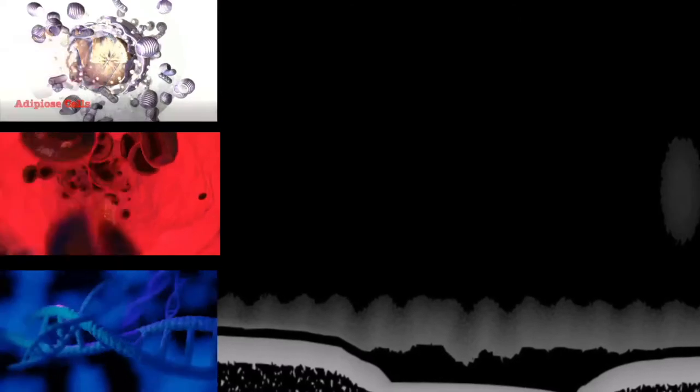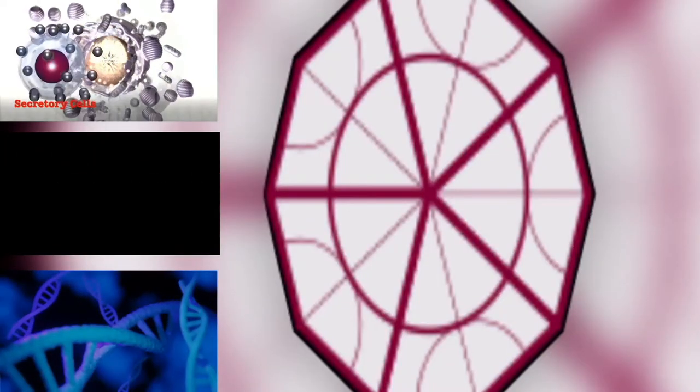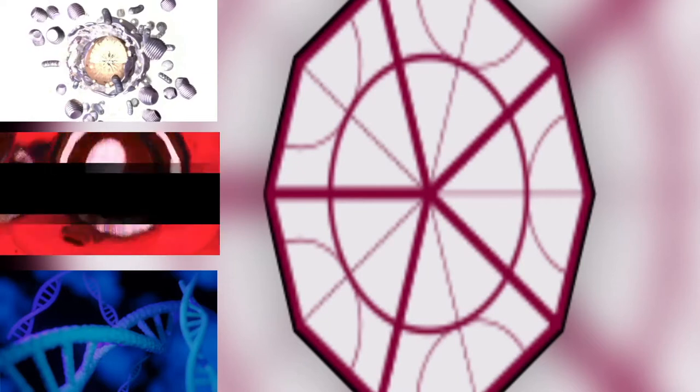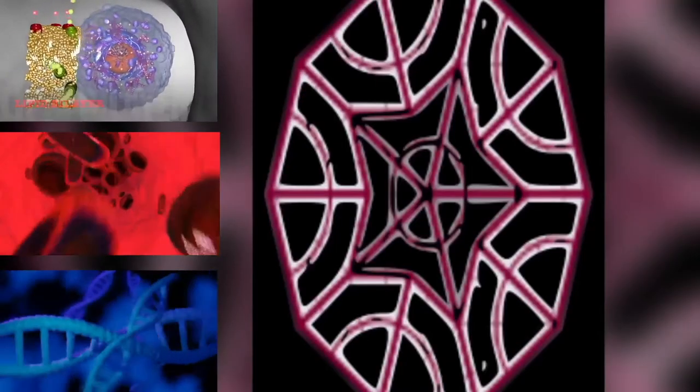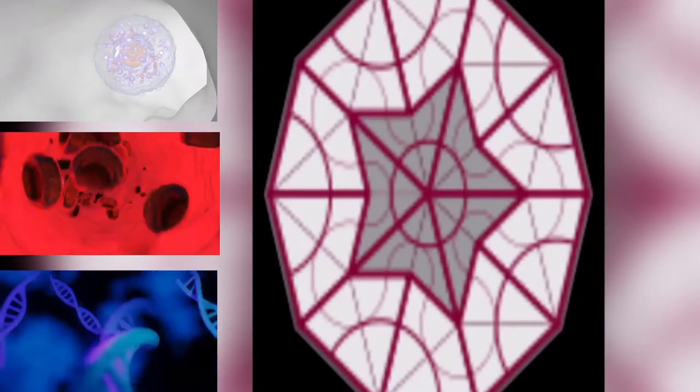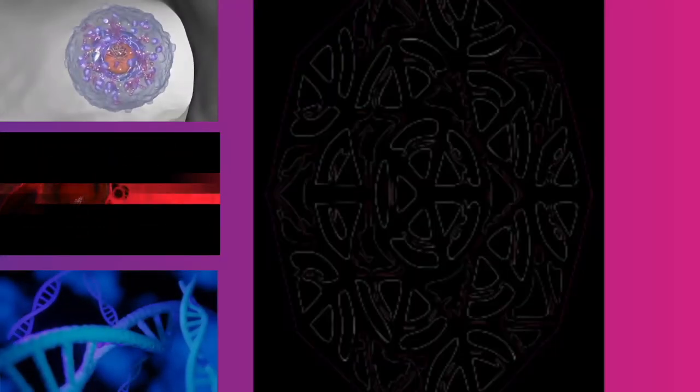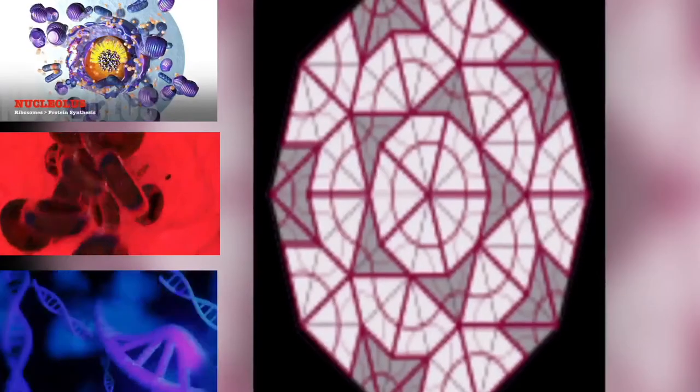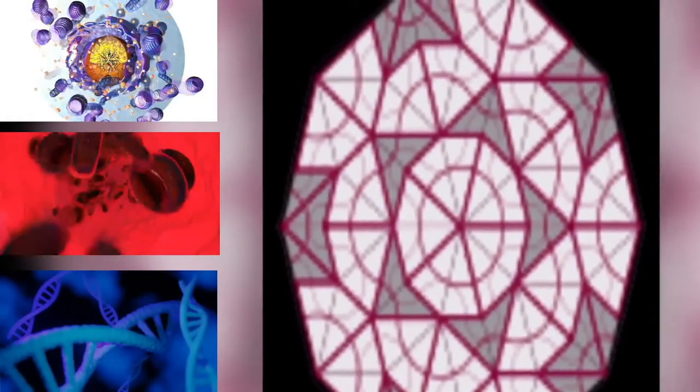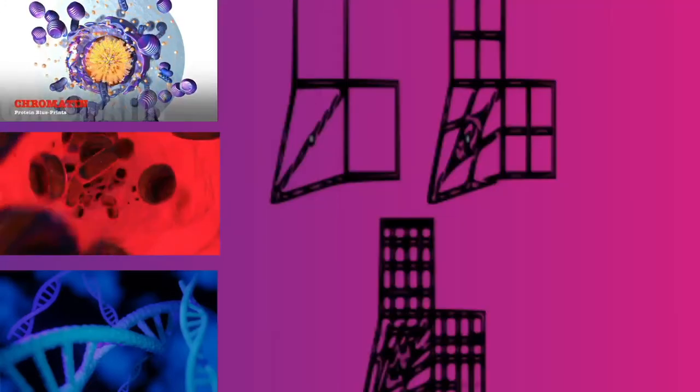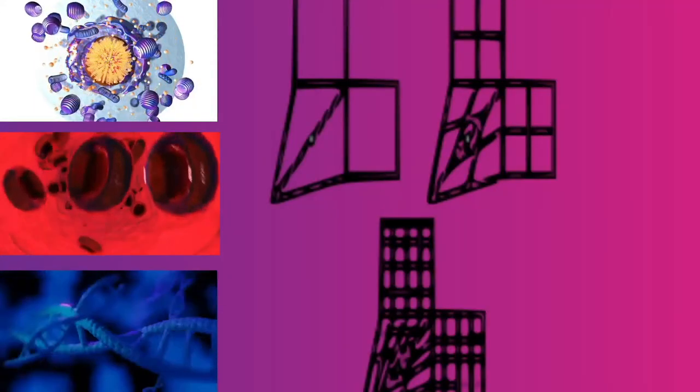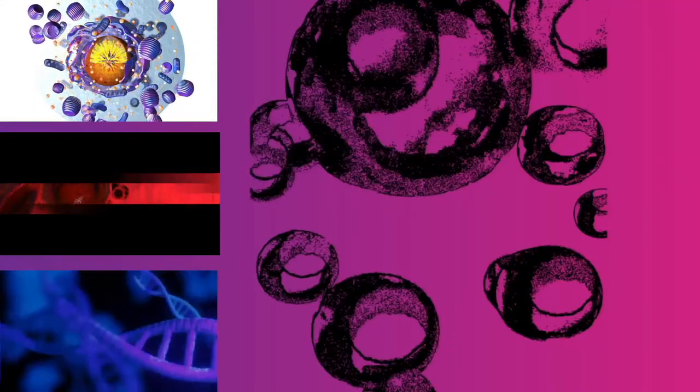Although plastids probably had a single origin, not all plastid-containing groups are closely related. Instead, some eukaryotes have obtained them from others through secondary endosymbiosis or ingestion. The capture and sequestering of photosynthetic cells and chloroplasts occurs in many types of modern eukaryotic organisms and is known as kleptoplasty.